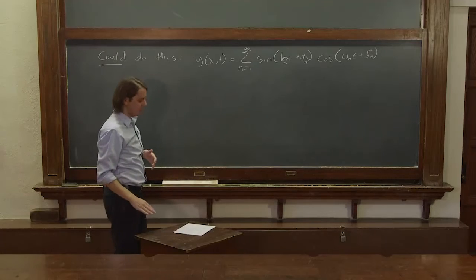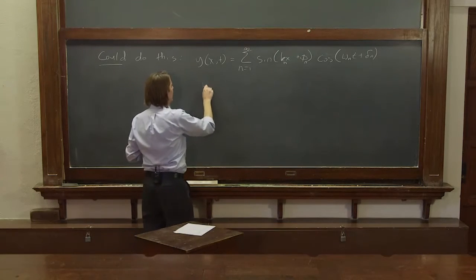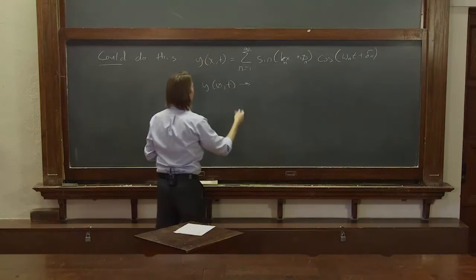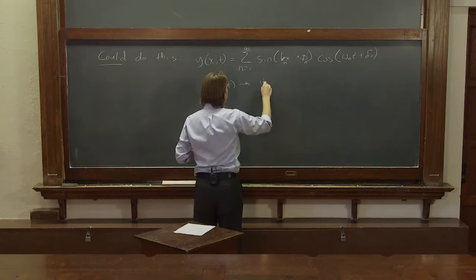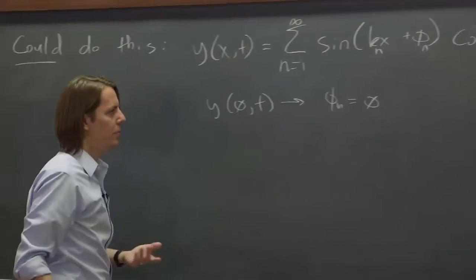So we could take a solution like that and start applying boundary conditions, and we know from our previous work that if you clamp the left, since it's a sine, we described it with a sine that tells you that the phi_n's are equal to zero, so that's good.